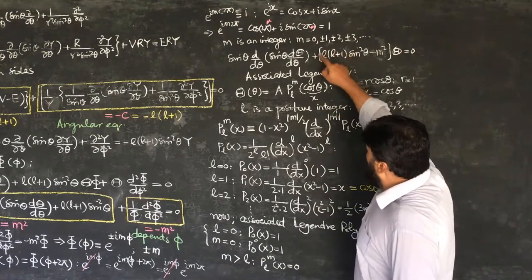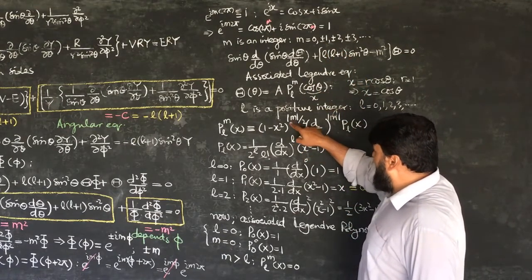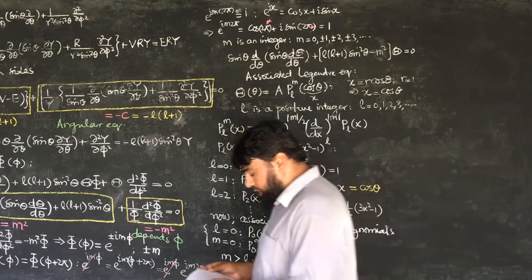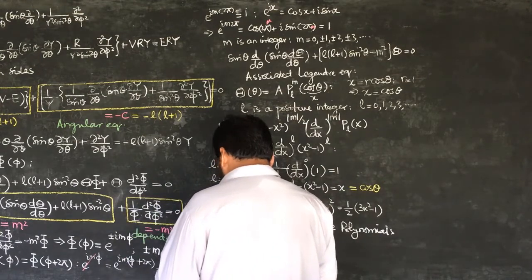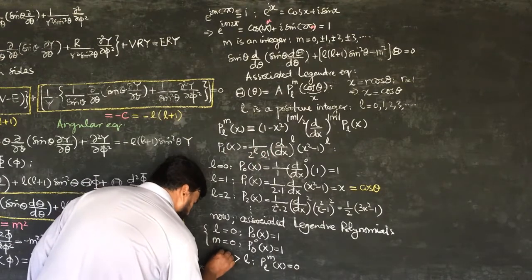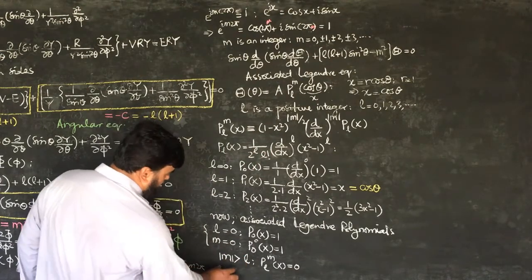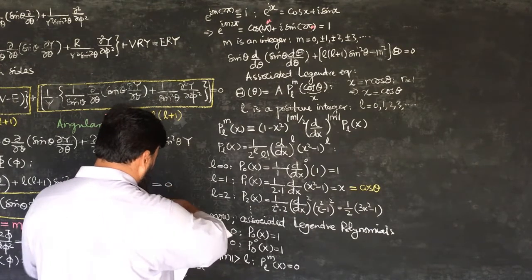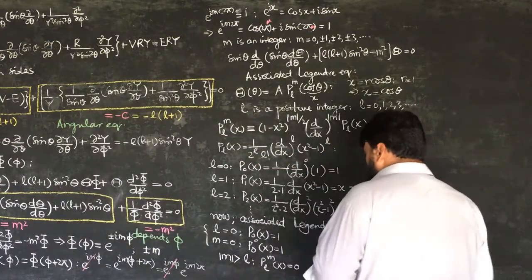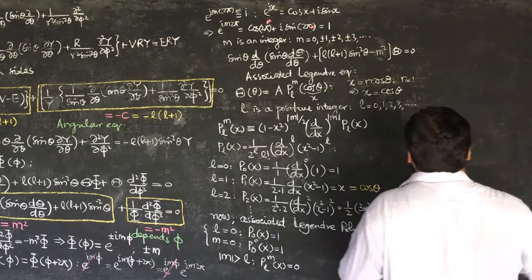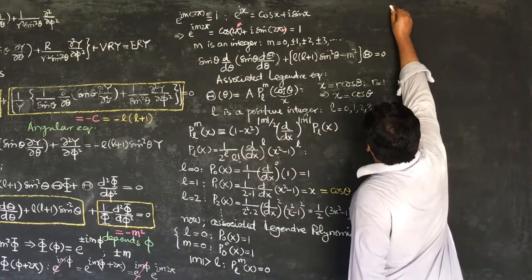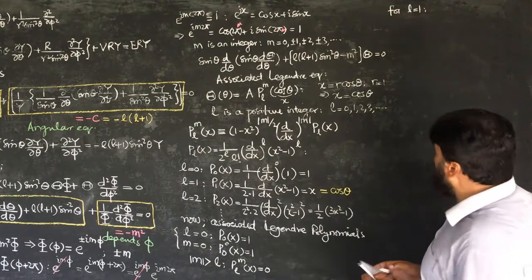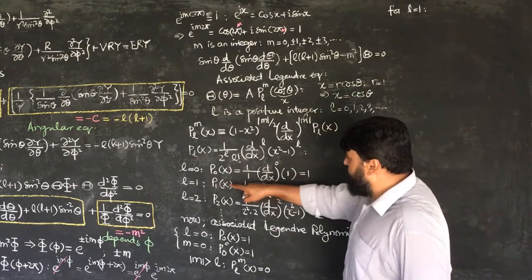For m = -1 we again get (1-x²)^(1/2) times the derivative of a constant, which is again 0. We can therefore write the general rule: when |m| is greater than l, all associated Legendre polynomials will be equal to 0. With l=0 confirmed, we now move to l=1, where P_1(x) = x.